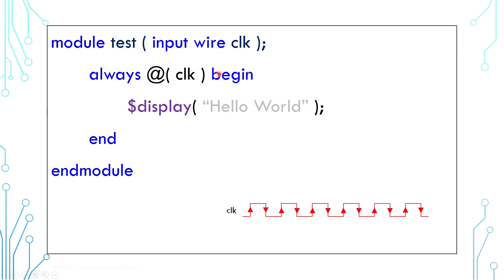The trigger event can also depend on a signal instead of time. The example here shows an AlwaysBlock that uses a clock signal. It will print Hello World every time the clock toggles from 0 to 1 or from 1 to 0. You can also limit the trigger event by using the syntax posedge or negedge, which means positive edge or negative edge. A positive edge means a toggle from 0 to 1, whereas a negative edge means a toggle from 1 to 0.